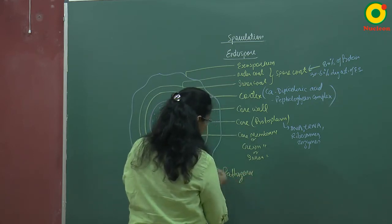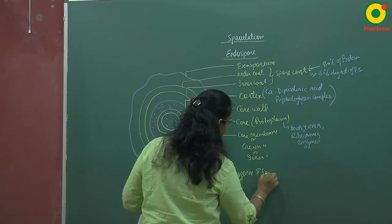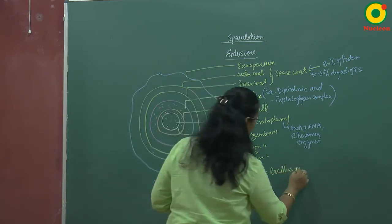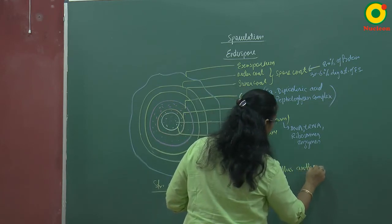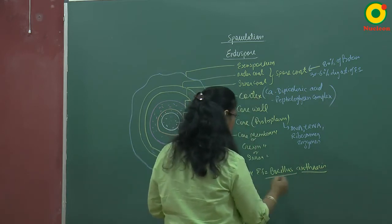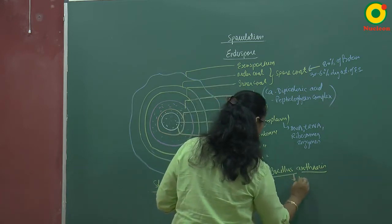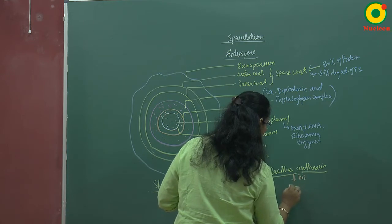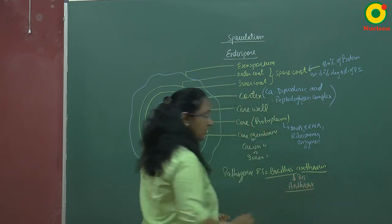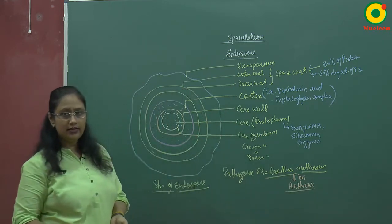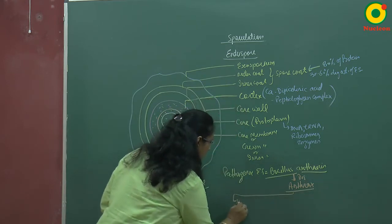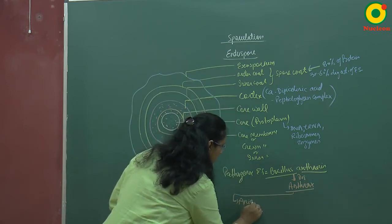One example of a pathogenic endospore is Bacillus anthracis, a bacteria which causes anthrax. It affects animals, and the endospore can be transmitted to humans, causing a very serious disease.